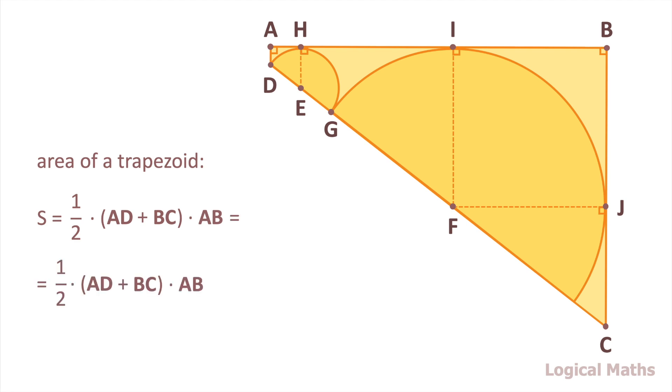BC equals to the sum of BJ and JC. AB equals to the sum of AH, HI and IB. Let's find out all unknown lengths.